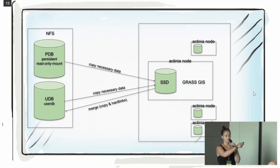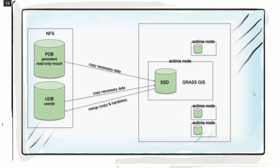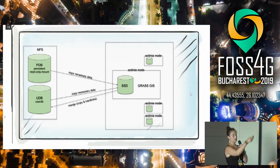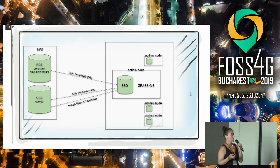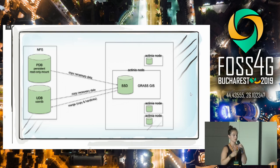We have a read-only file system where all the data is located, but to calculate quickly we mount it in all the Actinia nodes. An Actinia node is an installation of GRASS GIS with the Actinia REST API on top, and there are more of them. The data used for processing is then mounted into the nodes so we can quickly do calculations in separate nodes. If we calculate persistently, the data is written back to a user database.